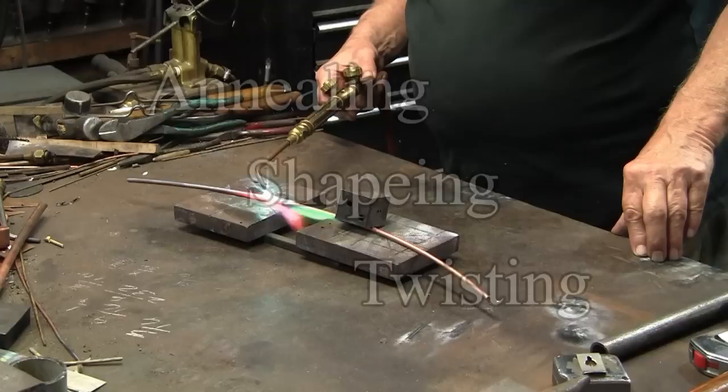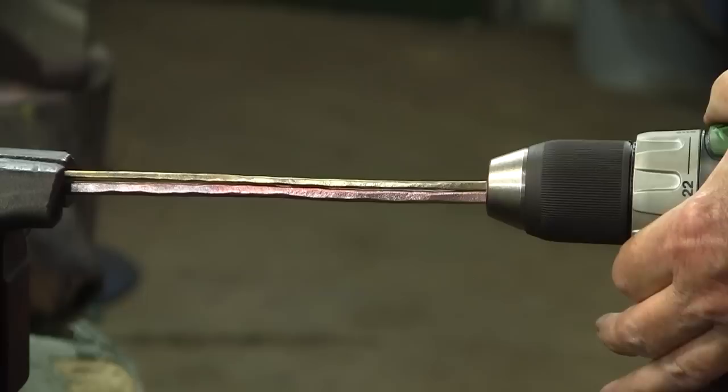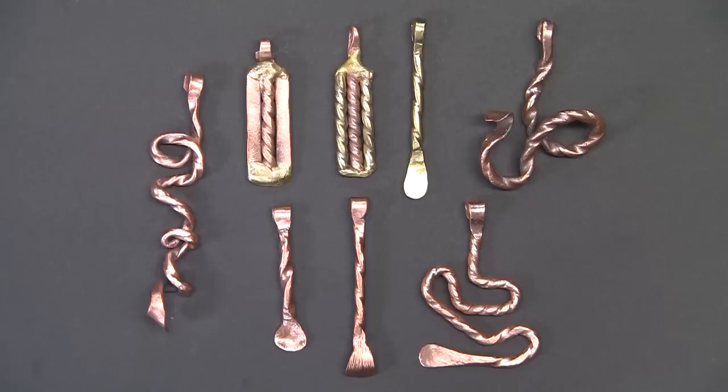Picking up where we left off at the last video, annealing, shaping, and then twisting copper wire in different diameters of copper wire, and in a few cases there is some brass wire.